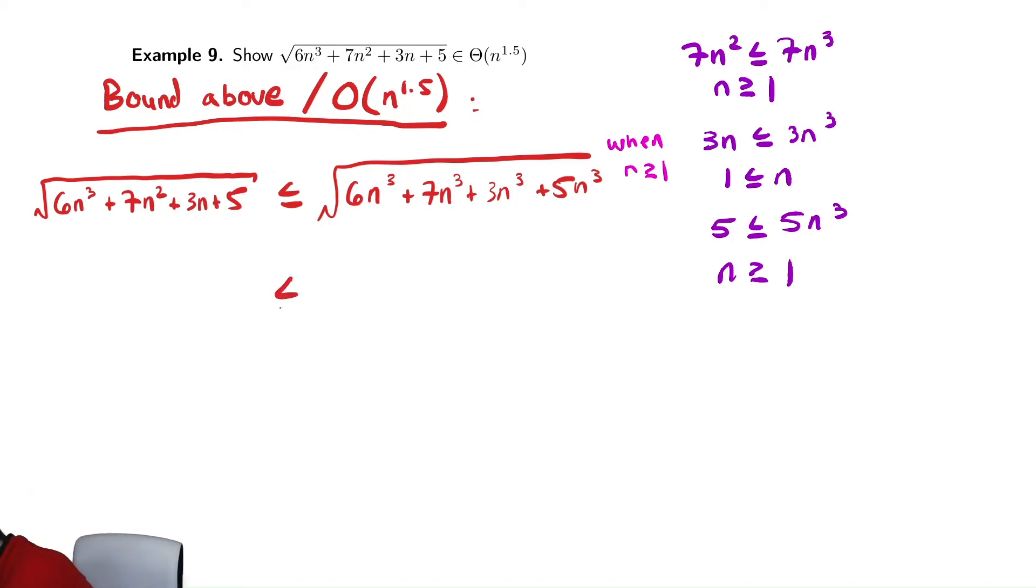So, this is less than or equal to radical... Collect together all the like terms. We have 6 plus 7 plus 3 plus 5, I think that's 21. 21n cubed, and maybe I can clean up the square root a little bit. Square roots of products work nicely. So we have the square root of 21 times n to the 1.5, which was the goal.